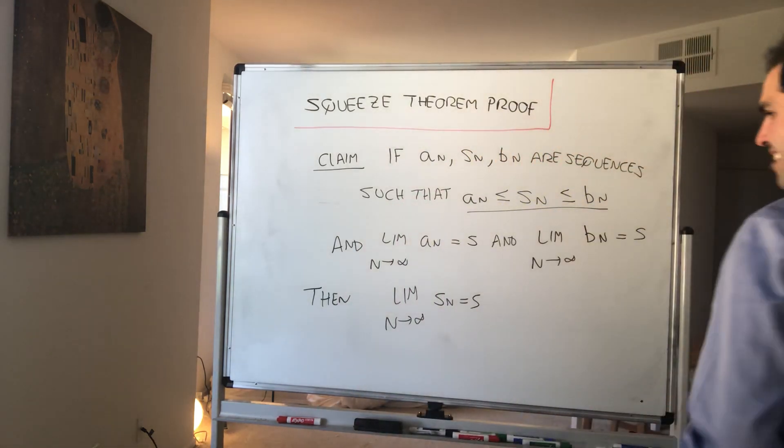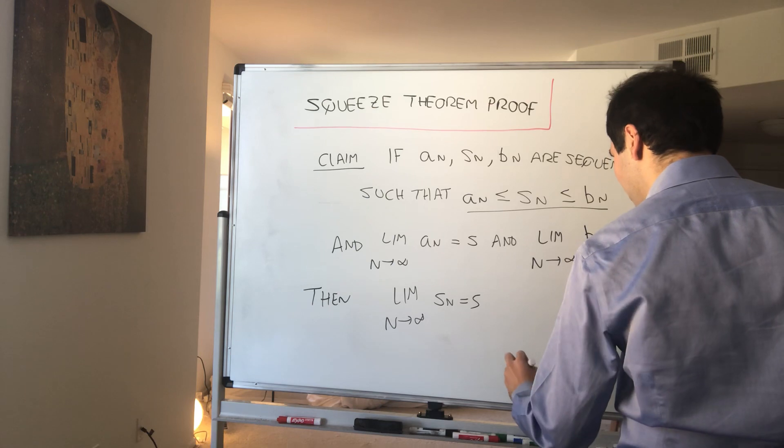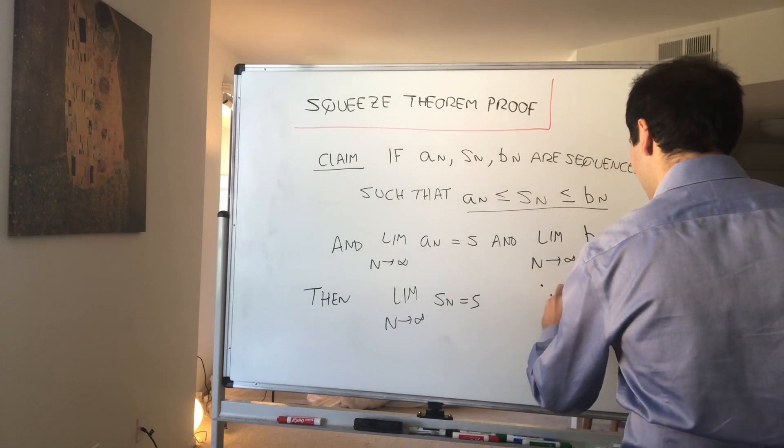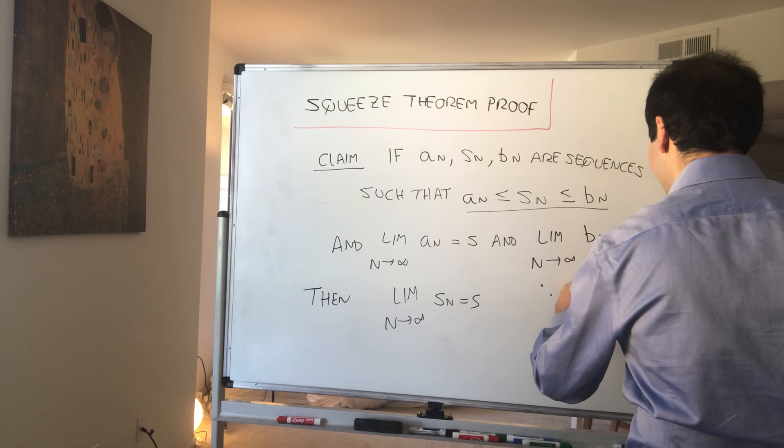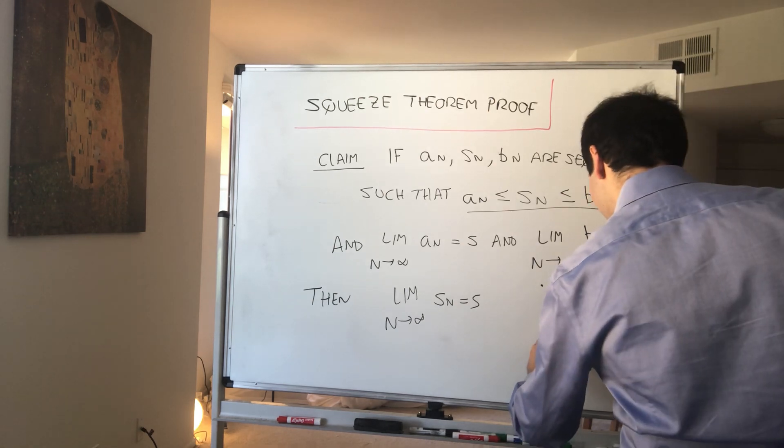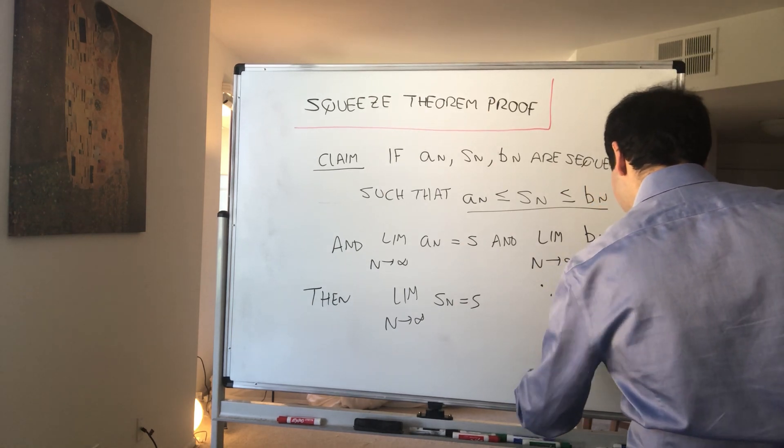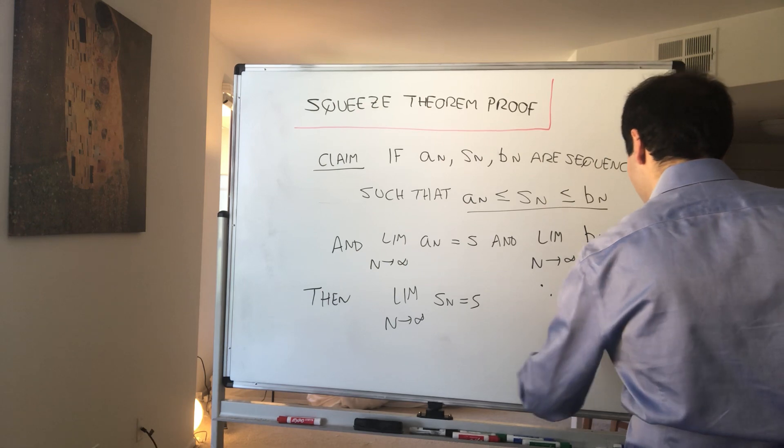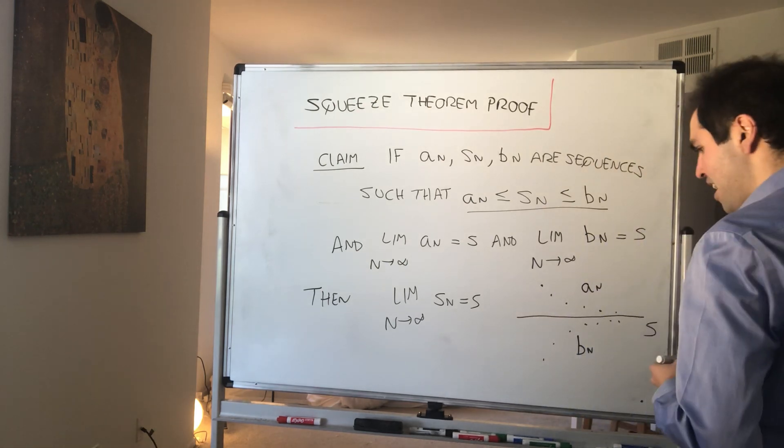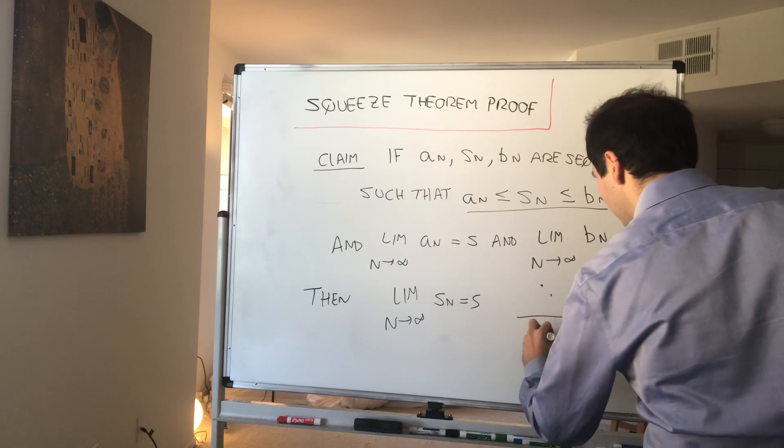Really, a picture says a thousand words. So again, suppose you have a sequence s_n that is squeezed between a_n and b_n. So this is a_n, this is b_n, which both converge to s, and s_n is just a sequence that's sort of in between.